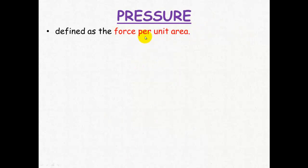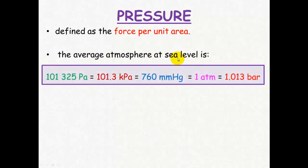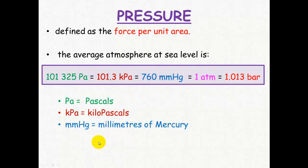With pressure, it's defined as force per unit area, and the average atmospheric pressure at sea level is 101,325 pascals, which is equivalent to 101.3 kilopascals with four significant figures—that's just a thousand times a pascal, just like kilograms—760 millimeters of mercury, 1 atmosphere, or 1.013 bar.